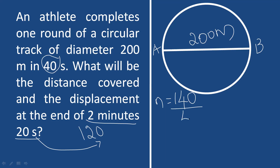Dividing 140 seconds by 40 seconds gives 3.5 rounds. So the athlete completes 3.5 rounds of the circular track. After 3.5 rounds, the athlete ends up at the diametrically opposite end of the circle — point B, which is the same circle.